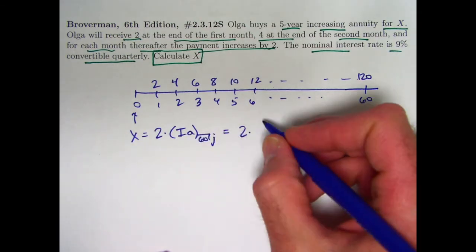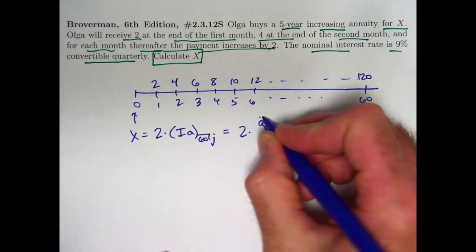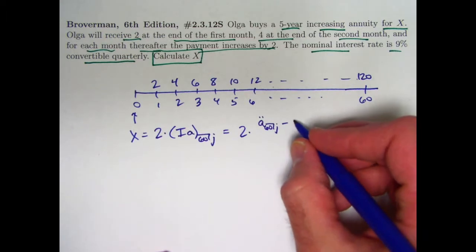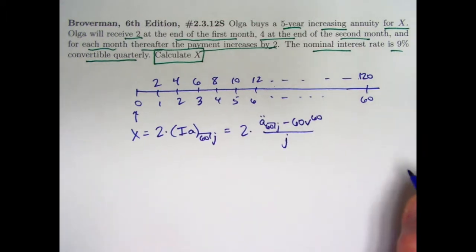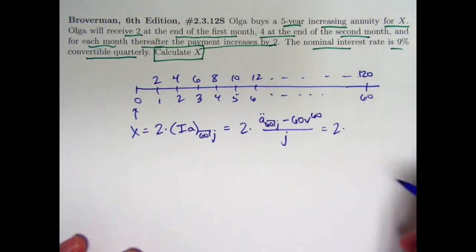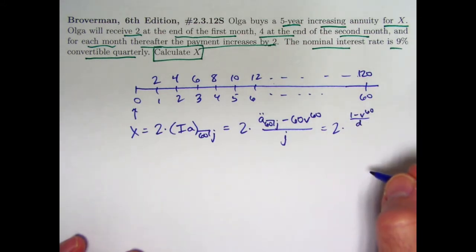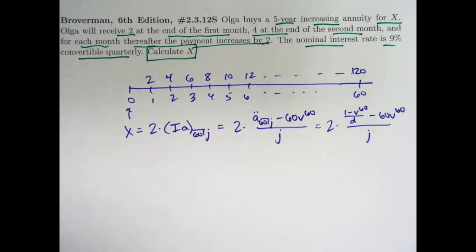Let's use the formulas we've developed recently to rewrite this. This IA sub 60 is that present value that's going to be A60 double dot, that's a present value of a level annuity due, minus N times V to the N. N is 60, so we get 60 times V to the 60th, all divided by J, this effective monthly interest rate. Now let's write in what A double dot is. That would be 1 minus V to the 60th divided by D, where D is the effective monthly discount rate.